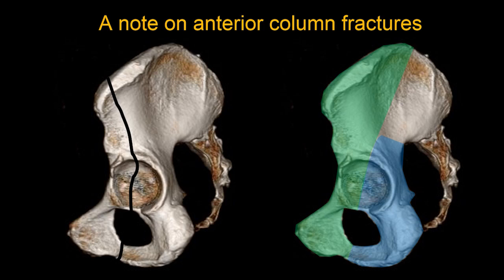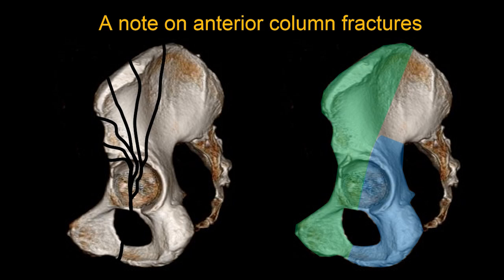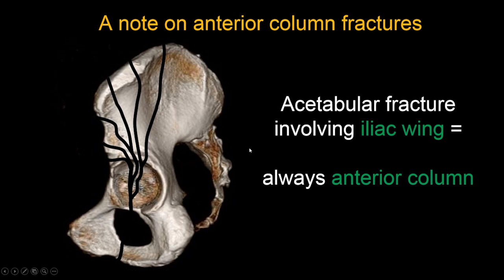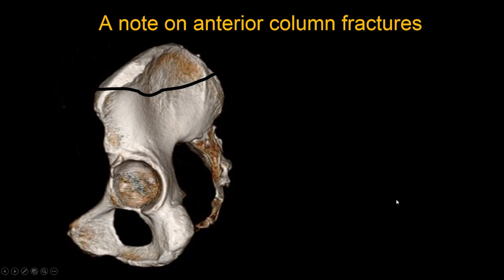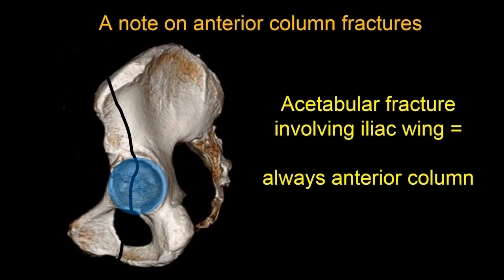A quick note on anterior column fractures: for the diagram, the anterior column fracture was drawn a certain way, but the anterior column involves a large portion of the iliac wing, so the fracture can involve any of that region. An anterior column fracture can look like several different patterns. The posterior column does not go up the iliac wing, so if an acetabular fracture goes up the iliac wing, it's always going to be anterior column. It must involve the acetabular articular surface to be called an acetabular fracture.